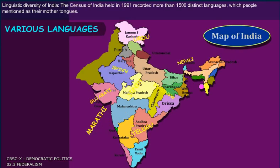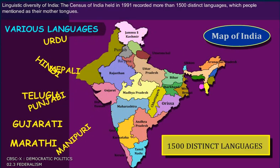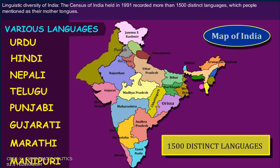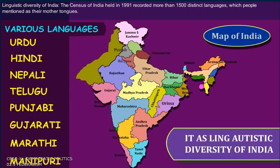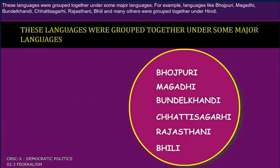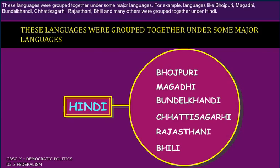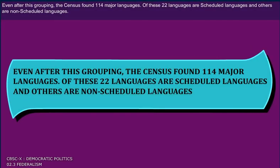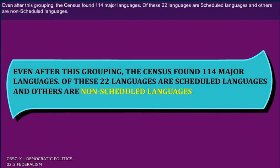Linguistic diversity of India: The census of India held in 1991 recorded more than 1500 distinct languages which people mentioned as their mother tongues. These languages were grouped together under some major languages — for example, languages like Bhojpuri, Magadhi, Bundelkhandi, Chhattisgarhi, Rajasthani, Bhili, and many others were grouped together under Hindi. Even after this grouping, the census found 114 major languages, of which 22 are scheduled languages and others are non-scheduled languages.